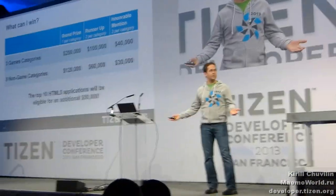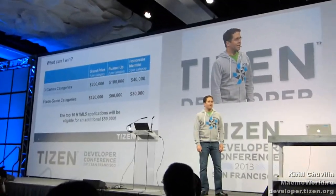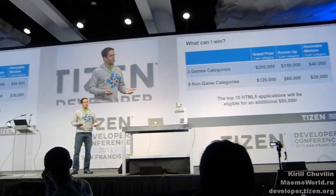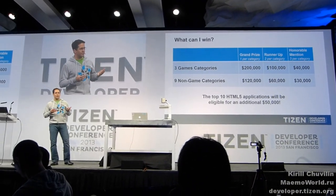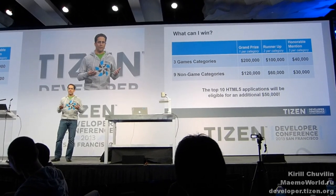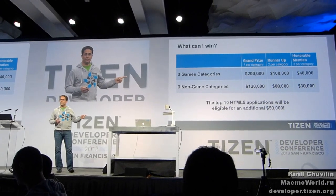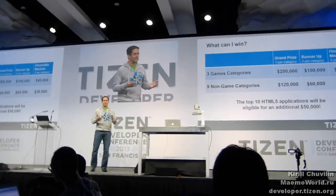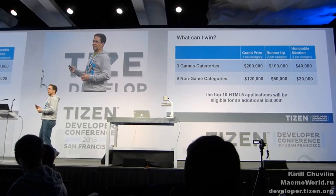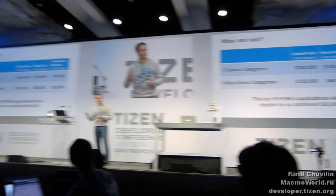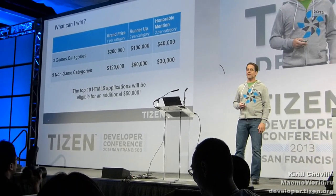So, what you can win — this is the most important part. We've got some pretty impressive prizes. If you're developing a game, the grand prize is up to $200,000. If you're developing in one of the non-game categories, it's up to $120,000. And for the top 10 HTML5 applications, there's an additional $50,000 available. We really want to see some great apps coming into the Ties of Store and submitted to this contest, and especially HTML5.